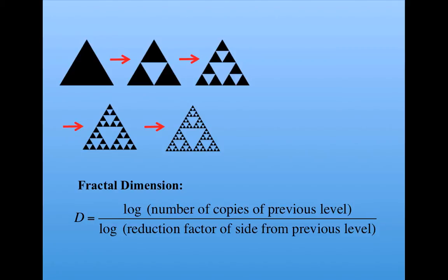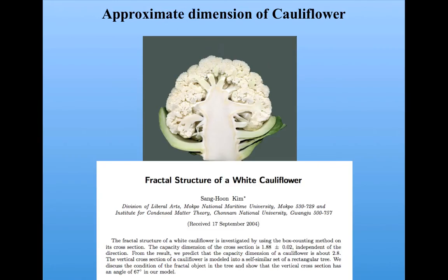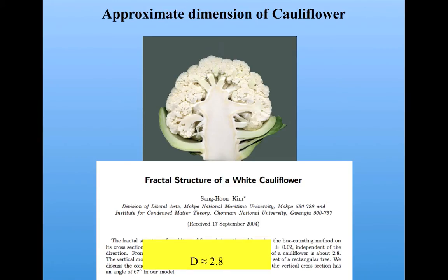Now let's look at some actual applications of fractal dimension in the real world. I'm sure you've always wanted to know the dimension of cauliflower. Fortunately, it's been calculated at approximately 2.8. That is, if you look at a cross-section of cauliflower — this flat thing — you find that it's actually a little more than two-dimensional, between two and three-dimensional, due to the dense fractal self-similarity of the cauliflower branches.